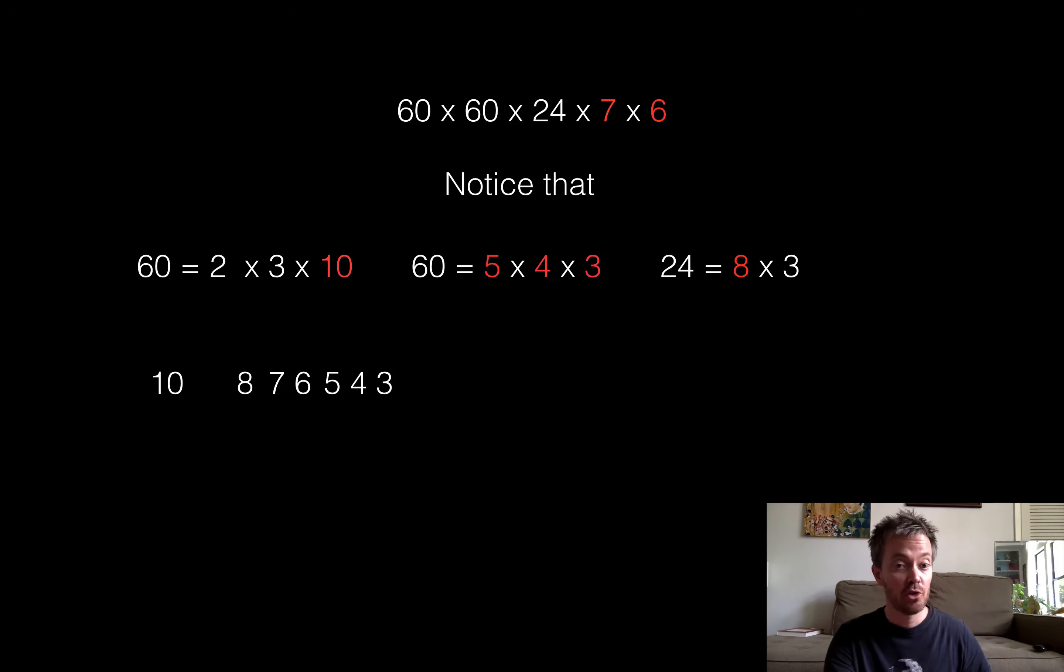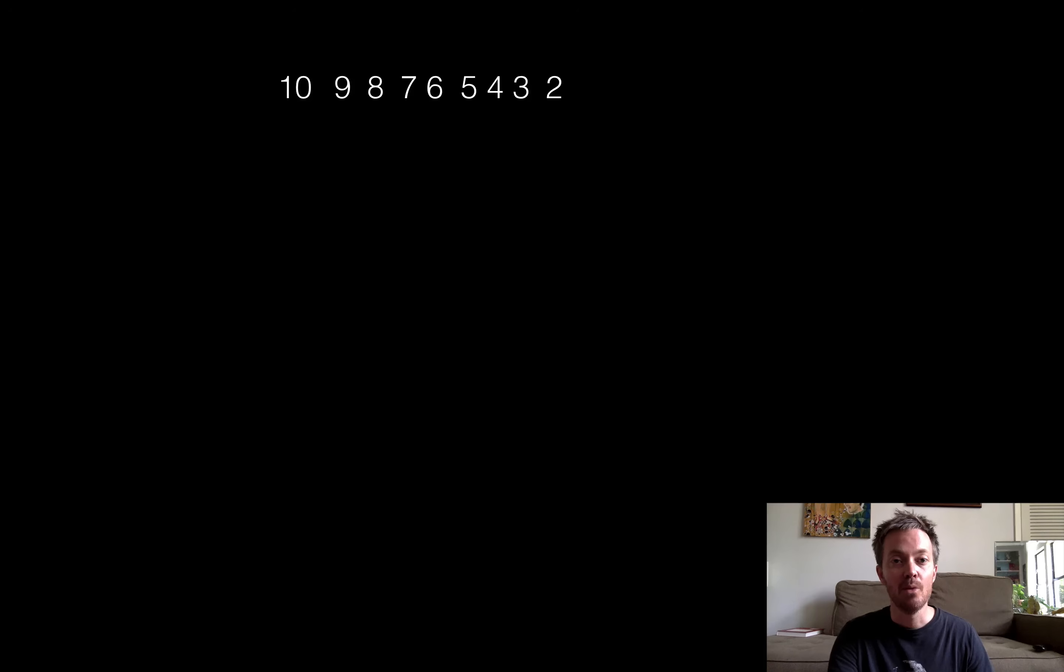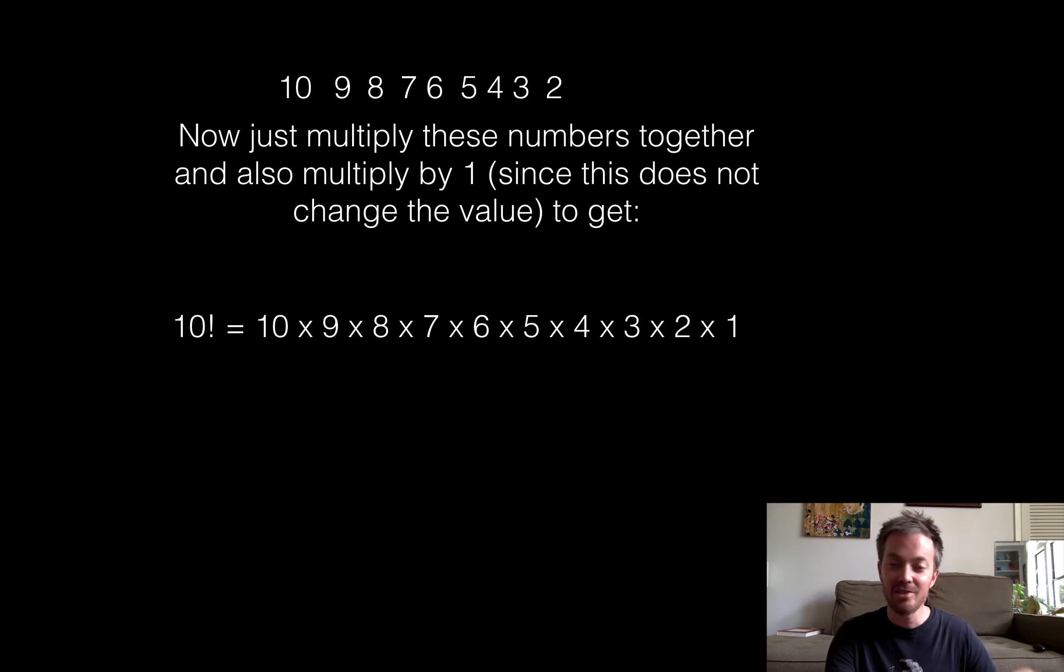I'm going to skip 9 for a second. Or 8, we can pick that up from the 24. 7 times 6, that comes from the top row. 5 times 4 times 3, we can get that from the second 60. What are we missing? We're missing a 2. Well, there's a 2 in the, again, in that first set of factors from the 60. We still need a 9. But notice there's two 3's left over. So we can multiply 3 times 3 to give us our 9. Hey, so now we've got all of those numbers. All we need to do is simply multiply those together. And then just tack on a multiple, times 1 because that's not going to change the value. And lo and behold, we do have 10 factorial seconds in 6 weeks. Kind of cool.